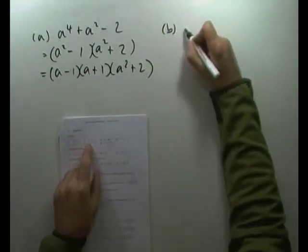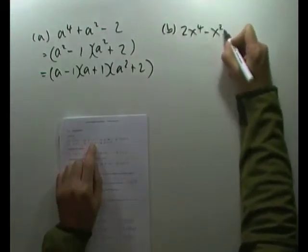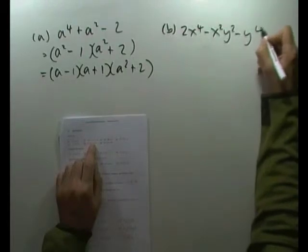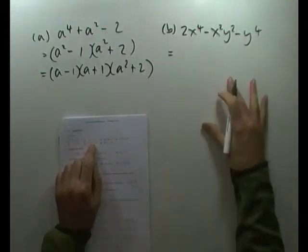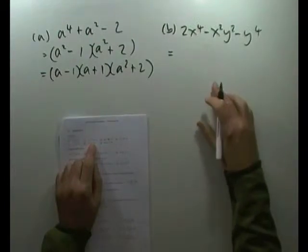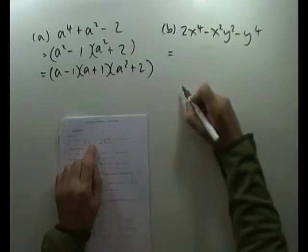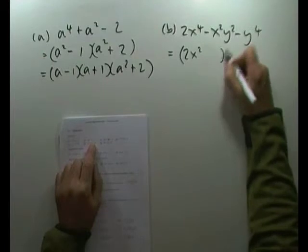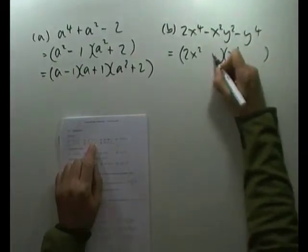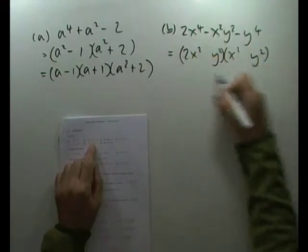So I'd have to be 2x to the 4 minus x squared, y squared minus y to the 4. Again a quadratic because I've got these even powers. This time it's a quadratic in x squared and y squared. So it's quadratic on both sides of it. Well, the factorization would be 2x squared times x squared. Must finish y squared and y squared.